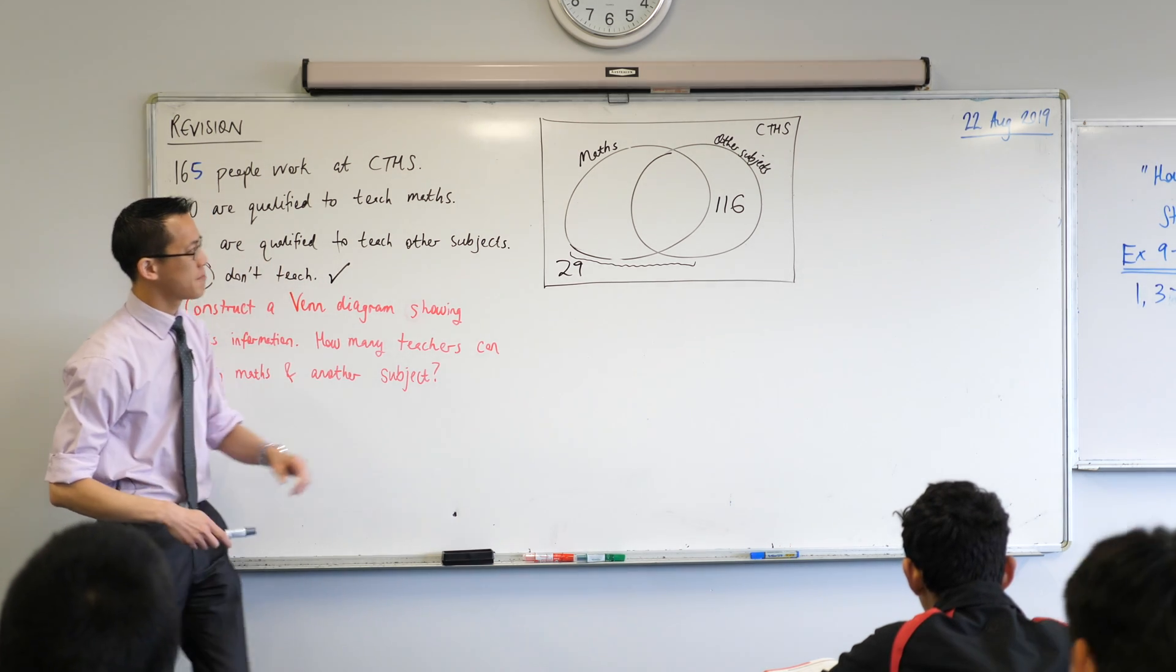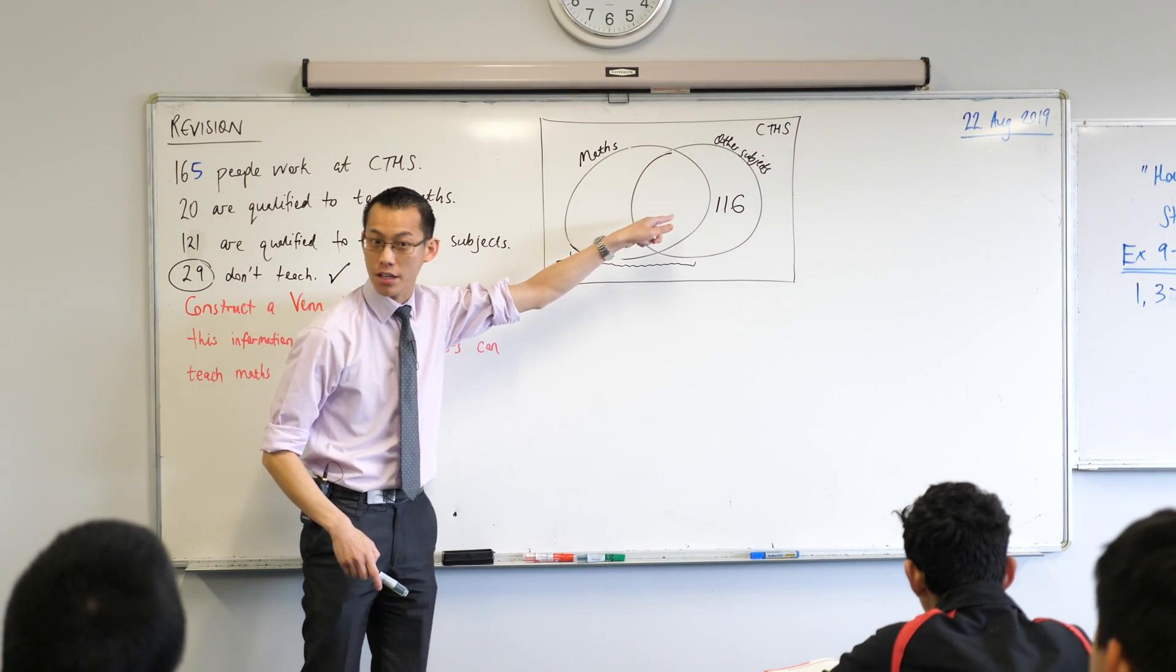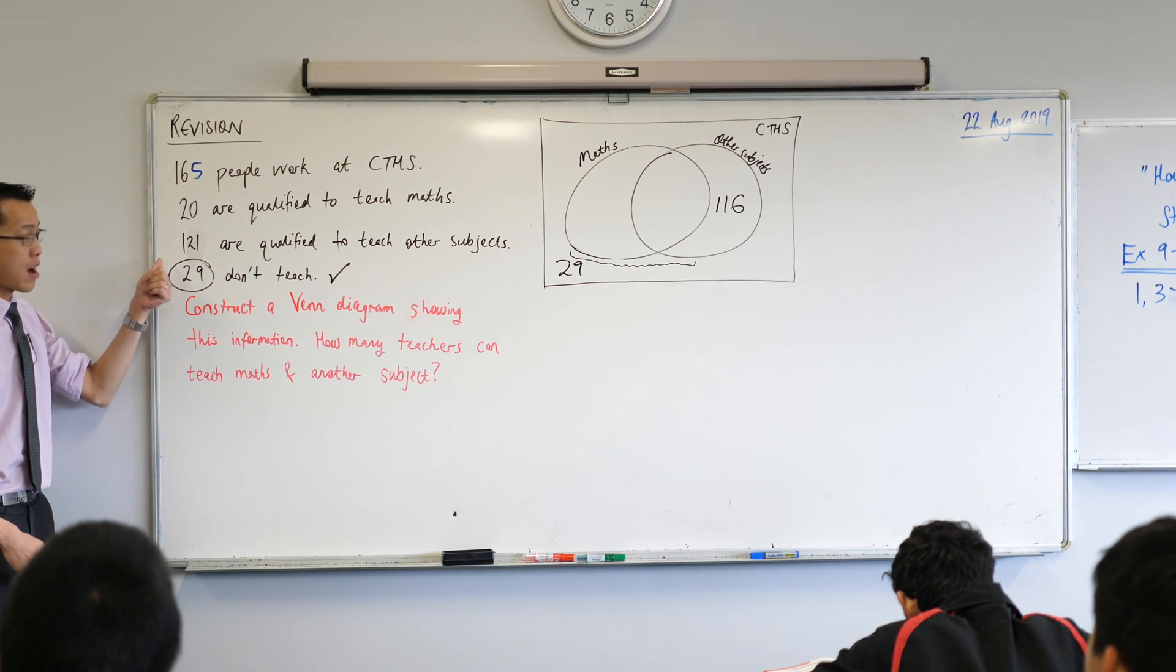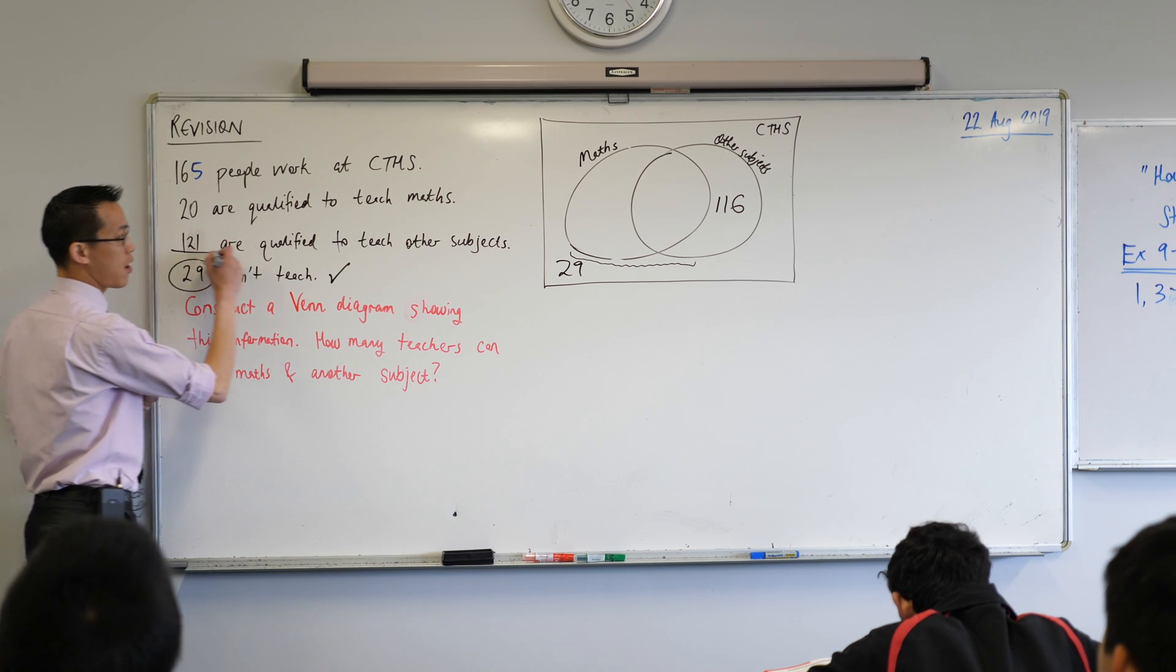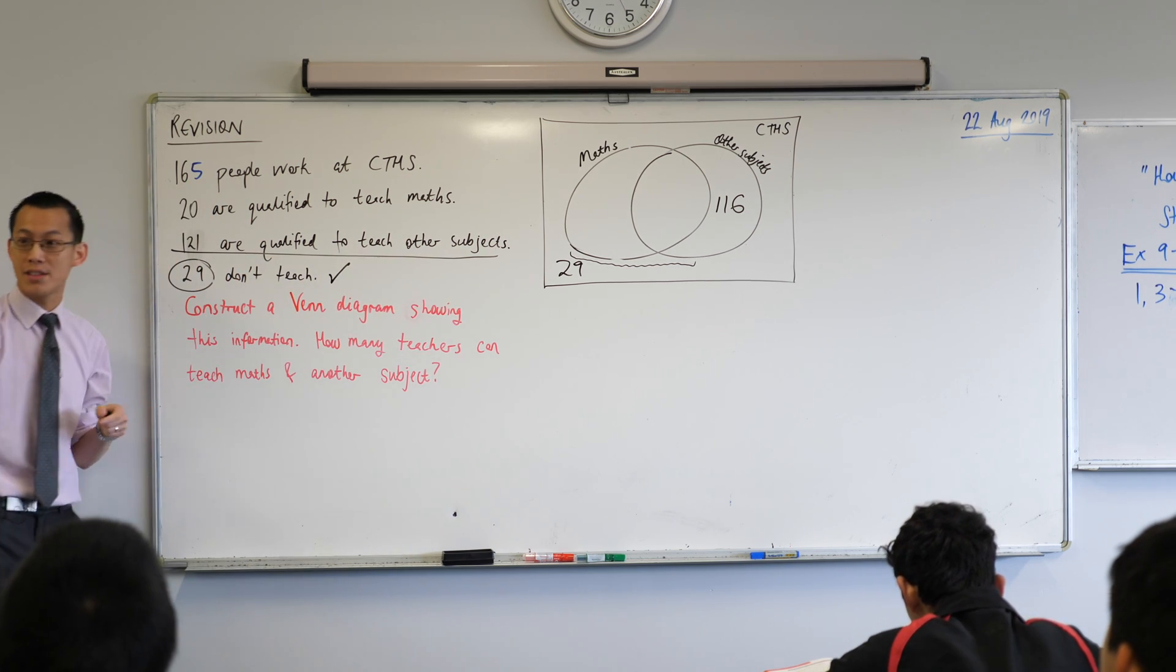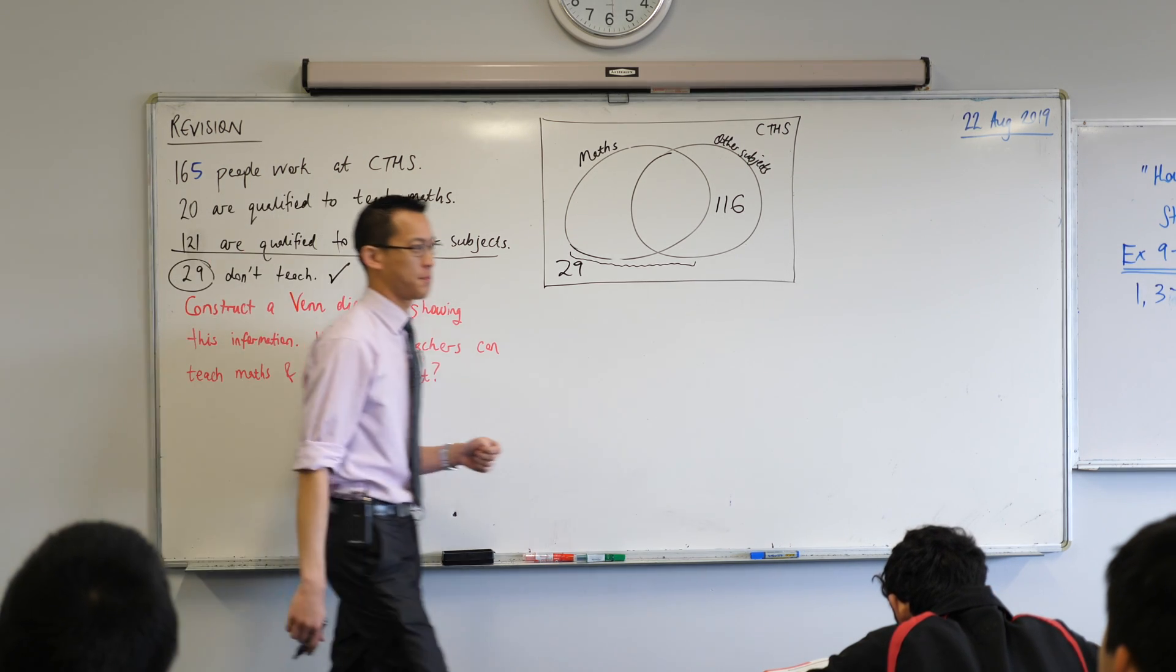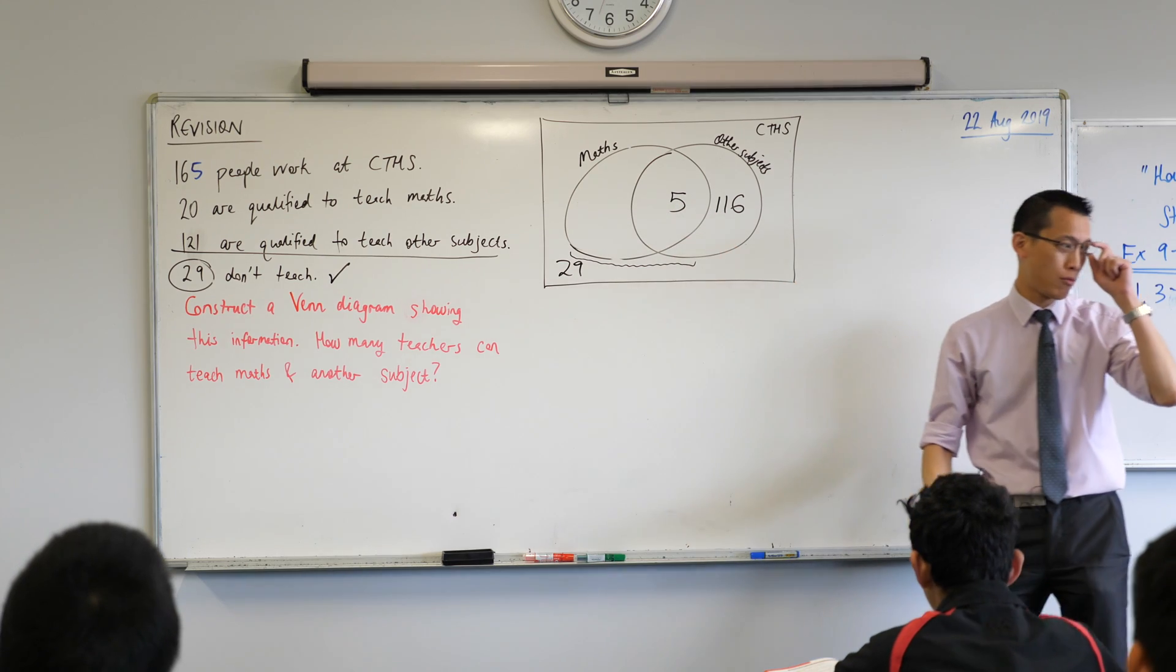I've got this in-between bit, right? Because there's more than 116 people who teach other subjects. How many are there? There's 121 who should be in that right-hand circle, and so far I've counted 116 of them. How many are left over? 5, right? 116 plus 5 gives me 121.